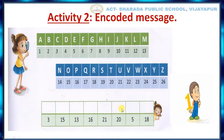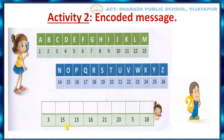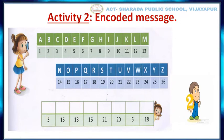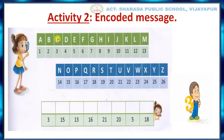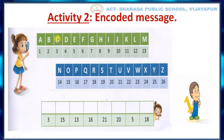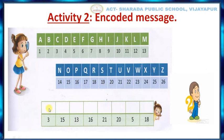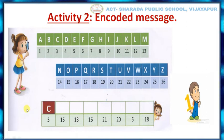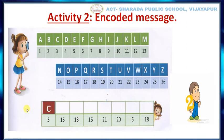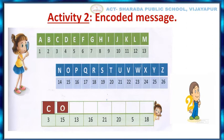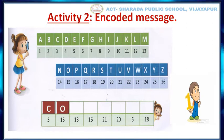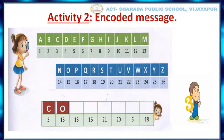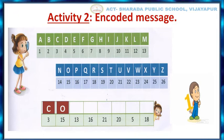For example, the first number is 3. The letter which belongs to 3 is C. So write the letter C in the first box. Like this. And the second one is O. Similarly, find the complete word by filling the other boxes in the same way.